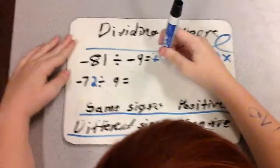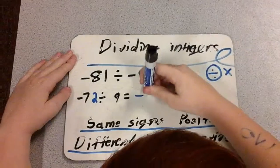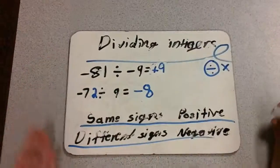So, negative 81 divided by negative 9 is positive 9. Negative 72 divided by positive 9 is negative 8. Bye.